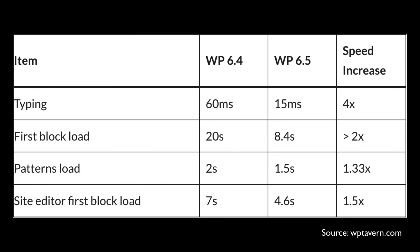Gutenberg is also getting some amazing performance improvements in WordPress 6.5. You can see on screen the difference between WordPress 6.4 and WordPress 6.5 and the speed increases in the far right column. These both affect the block editor and also the site editor. This is great news.